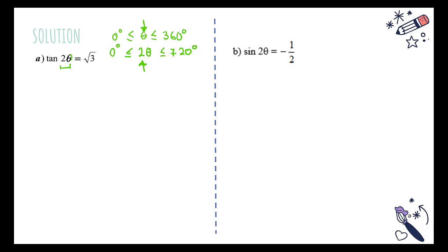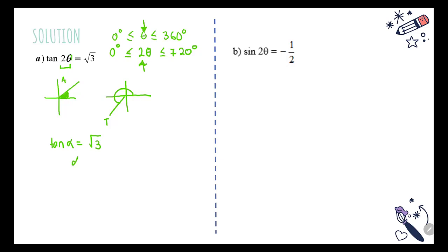The steps are otherwise almost similar. We start by deciding which quadrant. Since tangent is positive, there will be angles in the first quadrant and the third quadrant. Second, we find the reference angle α: tan(α) = √3, so α = 60°, since arctan(√3) = 60°.